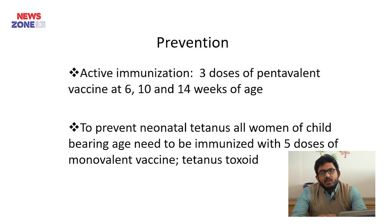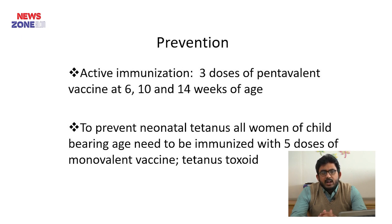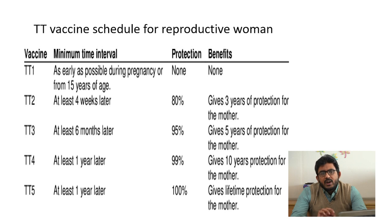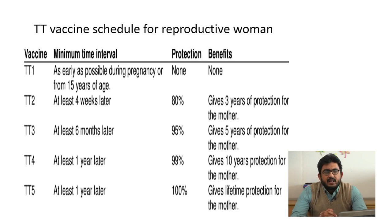For prevention, active immunization consists of 3 doses of pentavalent vaccine at 6, 10, and 14 weeks of age. To prevent neonatal tetanus, all women of childbearing age need to be immunized with 5 doses of monovalent tetanus toxoid. The TT schedule for reproductive women has 5 doses: the first dose as early as possible at age 15 to 49 years, the second dose 1 month later, the third dose 6 months later, the fourth dose at least 1 year later, and the fifth dose at least 1 year after that.